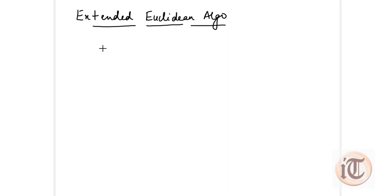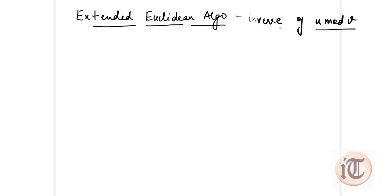Today we are going to discuss the Extended Euclidean Algorithm. This algorithm is an extension of Euclid's algorithm. As we know, Euclid's algorithm is used to find the GCD of any two positive integers. Similarly, this algorithm is used to find the inverse of u mod v. This algorithm is also implemented in the RSA algorithm when you have to find such type of equation.